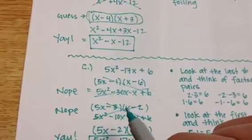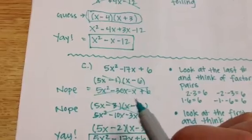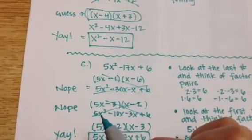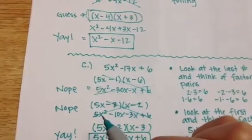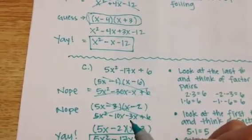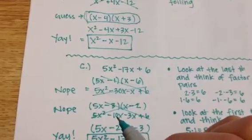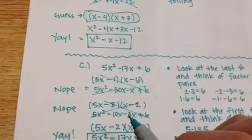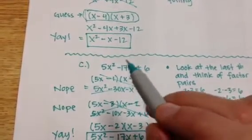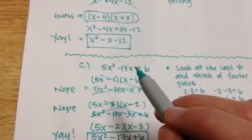This time I'm going to do 5 and 1 again, but now I'm going to switch to 3 and 2. When I do this, I get 5 times x is 5x squared. I get a negative 10x, a negative 3x, and negative 3 times negative 2 is positive 6. Here again though, negative 10 and negative 3 gives me negative 13. I'm closer to that negative 17x, but I still don't quite have it.